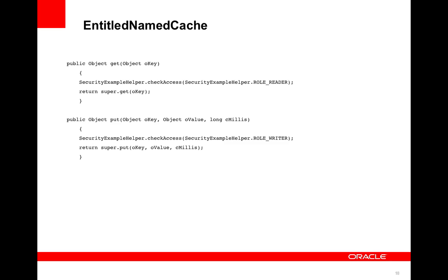The code passes in a role name. A get can be done by a reader. A writer can do a put or a get in the example code. You're passing that in and doing a simple check saying, does this subject have the role required to do a get? Does the subject have the role to do any required operation?